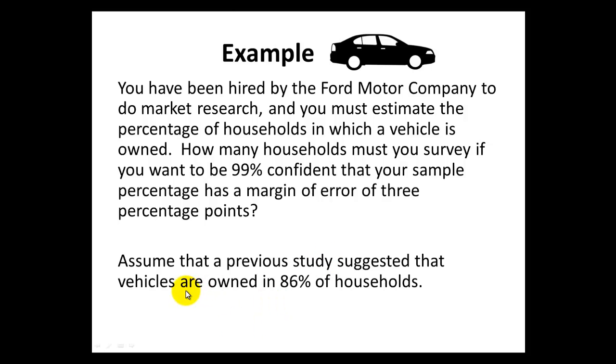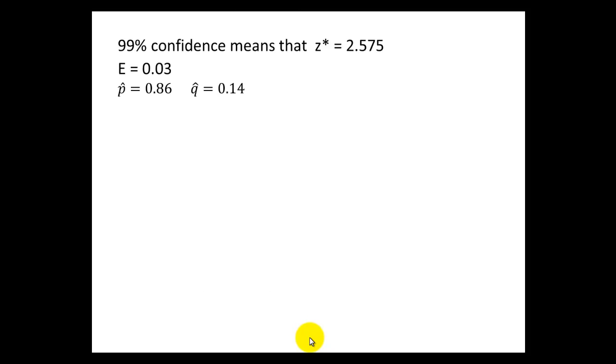We're going to assume that a previous study suggested that vehicles are owned in 86% of homes. So what we know so far is that we want 99% confidence for this, which means that our z star, our critical value, is going to be 2.575.